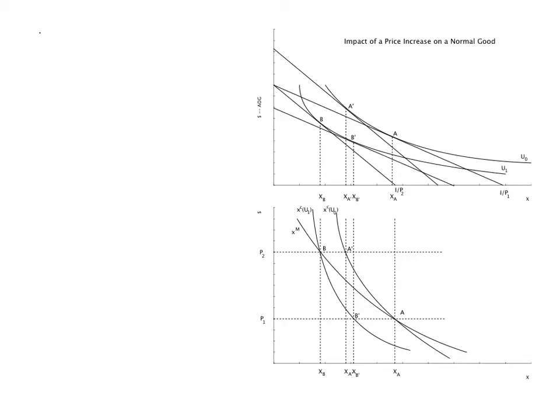Following the dashed lines down to the P-Q diagram, we see B and B prime on the compensated demand curve corresponding to holding utility equal to U1.